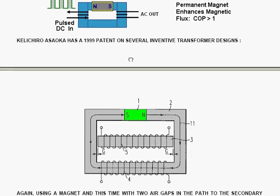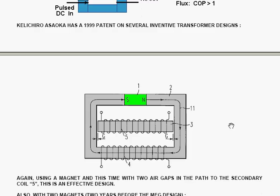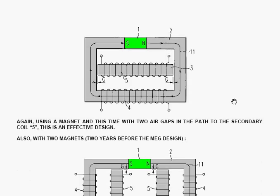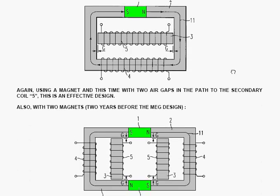Kilichardo Ahsoka has a 1999 patent on several inventive transformer designs. Again, he's using a magnet in the frame, but this time there are two air gaps in the path to the secondary coil, which is this one here, coil number 5.